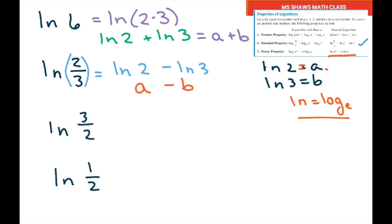Similarly, this is going to be ln of 3 minus ln of 2. So that's b minus a, just through substitution.